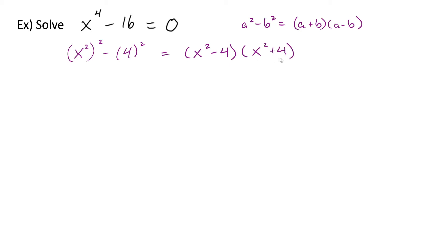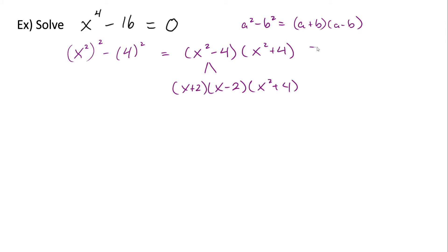So this factors into x squared minus four times x squared plus four. Now, x squared plus four is not factorable — we can't do anything else there. But x squared minus four, we can factor again using difference of perfect squares, because x squared is a perfect square and four is two squared. So this factors into x plus two times x minus two.